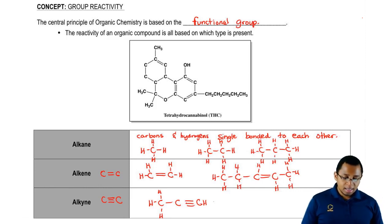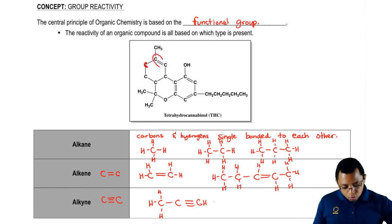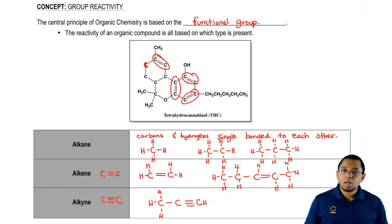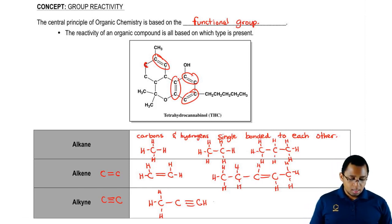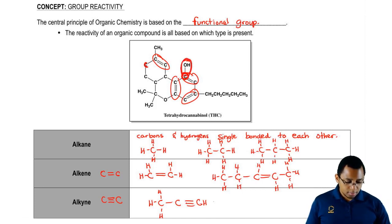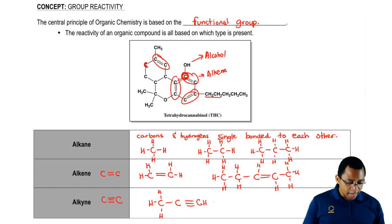Now, if we go back to THC, we can take a look and see what types of functional groups are present. We have a bunch of carbons here — two carbons, two carbons, two carbons, two carbons — all double bonded to each other, so all of those represent alkenes. Then this carbon here is connected to an OH. Although it's not completely single bonded all the way around, it is single bonded to at least one other carbon, so this would be an alcohol. These would be the alkenes. And then we have a lot of carbon-hydrogen chains here, all single bonded to each other — so these would all be alkanes.